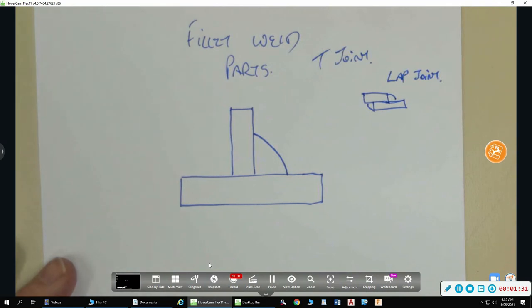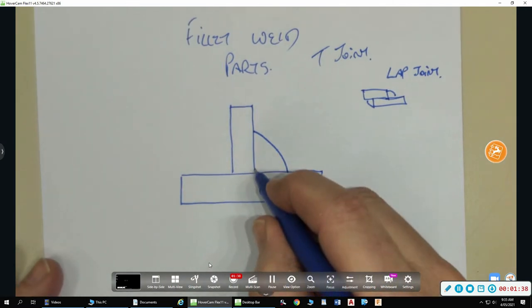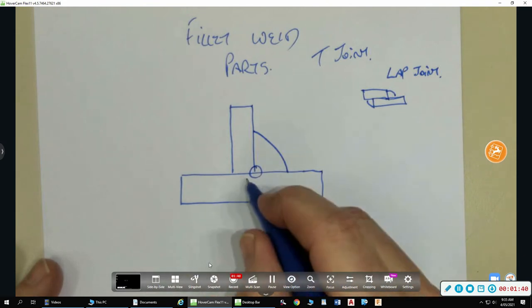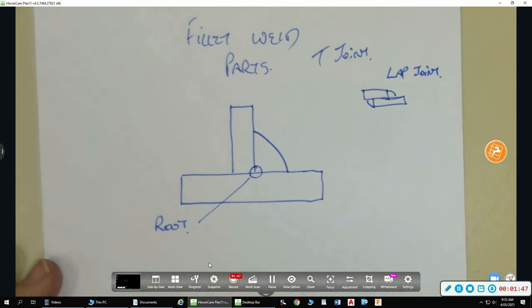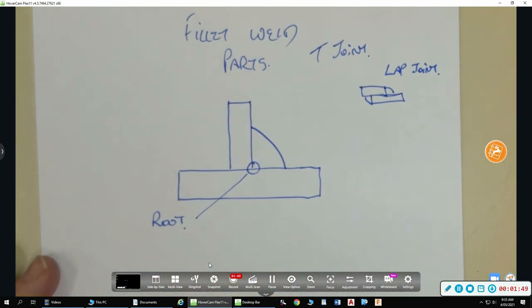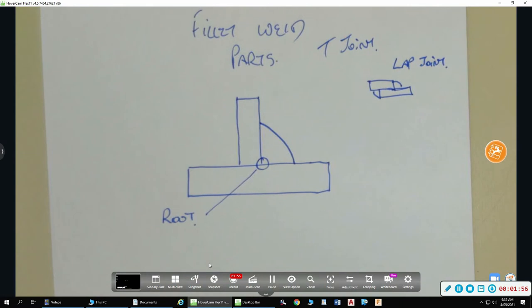Okay, so if we look at parts of the fillet weld, what do we call this little bit here? The root. So that's where it's very hard to tell if you've got fusion in the root with a fillet, can't do it through a visual inspection. Because you can't see. With the butt weld, of course you can flip it over and have a look at the other side of the joint.